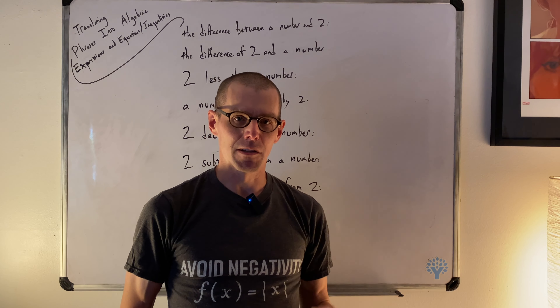There's only one version of subtraction — it's not commutative. So to begin: 'the difference between a number and two.' A number is x and two is two. We follow the order it's written. The difference between a number — which is x — and two, is x minus two. Just that. Not in the other direction.